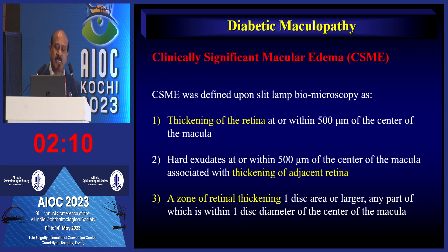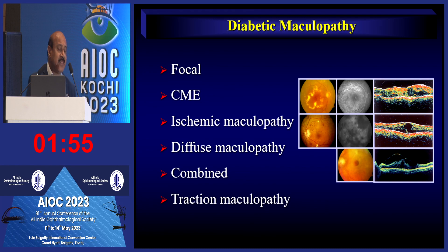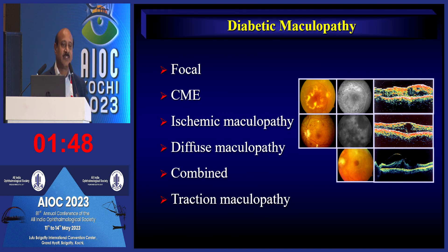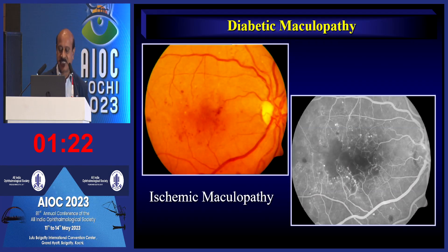ETDRS clearly defined clinically significant macular edema (CSME), which indicates the patient is at risk of losing vision if left untreated. In the clinic, you should not only focus on diabetic macular edema — other forms of diabetic maculopathy must be recognized: cystoid macular edema, focal macular edema, ischemic maculopathy, or combined types with diffuse and focal edema, as the management strategy differs for each.